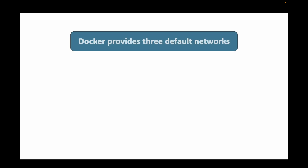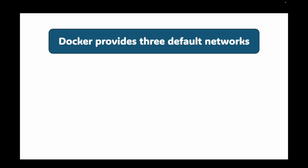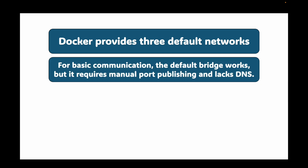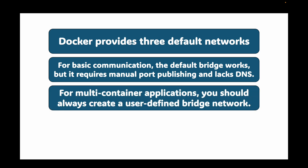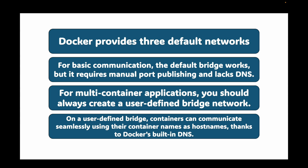Let's recap. Docker provides three default networks: the bridge network, the host network, and the none network. For basic communication the default bridge works, but it requires manual port publishing and lacks DNS. For multi-container applications you should always create a user-defined bridge network — on a user-defined bridge, containers can communicate seamlessly using their container names as hostnames thanks to Docker's built-in DNS. In the next session we'll cover creating custom networks, connecting containers to networks, inspecting networks, and setting up a multi-container application using a custom network and DNS.